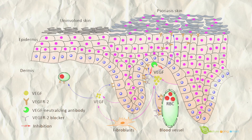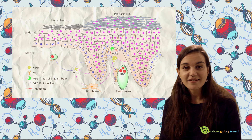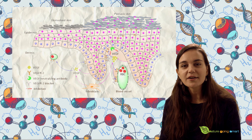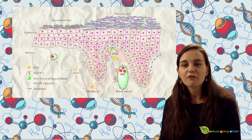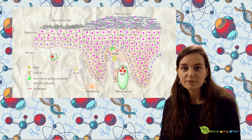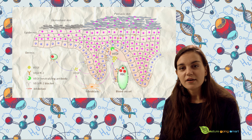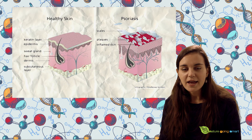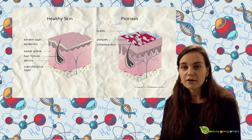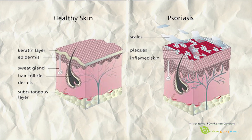CBN inhibits proliferation of skin cells, also called keratinocytes. Psoriasis is an inflammatory disorder characterized by hyperproliferation of epidermic keratinocytes. This disorder is still without an effective cure, and it is very possible that CBN could contribute to the management of this disorder.